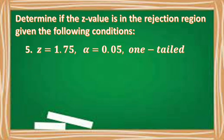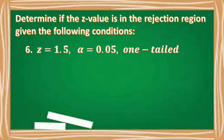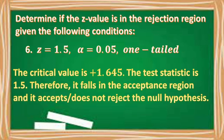Number five: Z = 1.75, α = 0.05, one-tailed. Critical value is +1.645. Since 1.75 > 1.645, it falls in the rejection region — reject the null hypothesis. Number six: Z = 1.5, α = 0.05, one-tailed. Critical value is +1.645. Since 1.5 < 1.645, it falls in the acceptance region — do not reject the null hypothesis.